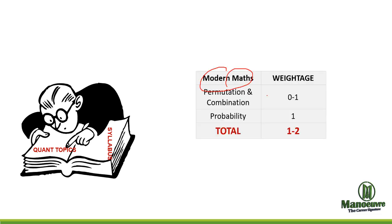Last one is modern maths. Permutation and combination 0-1, probability 1 mark. So approximately 1-2 questions you can expect from modern maths. Probability is the favorite topic of CET when it comes to modern maths. So you should prepare for these topics very well.